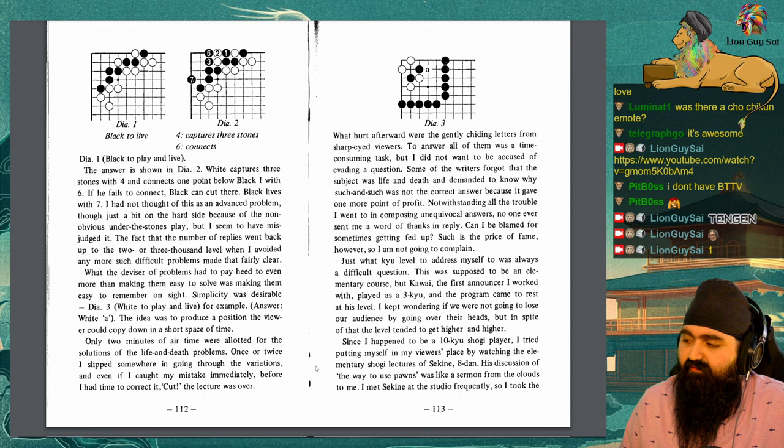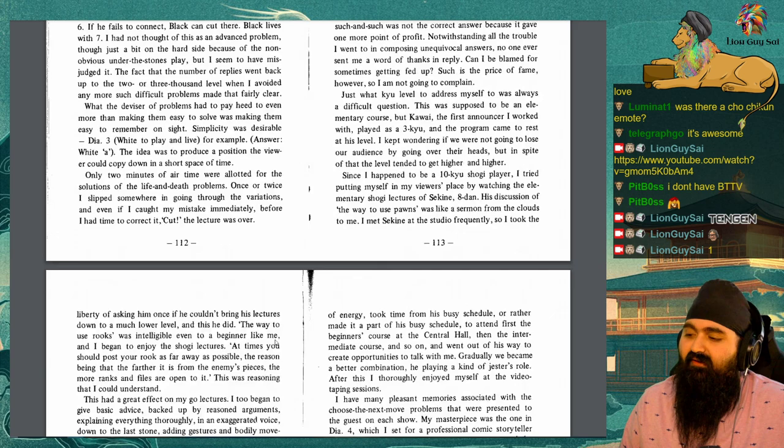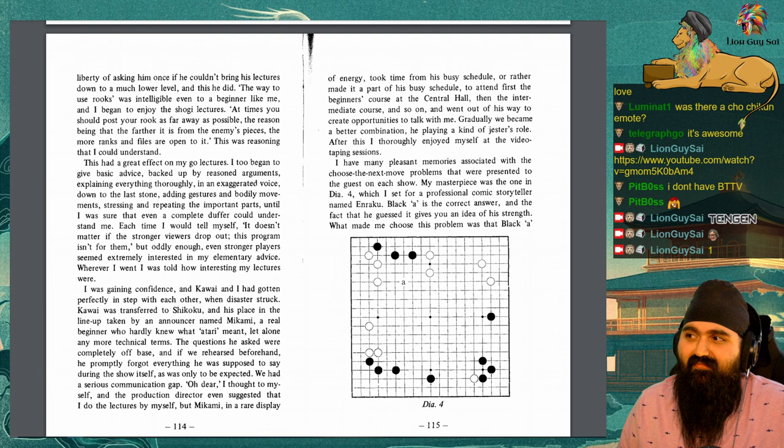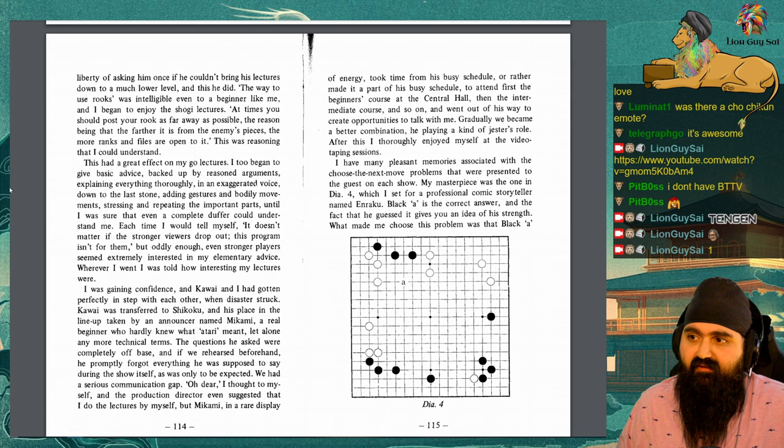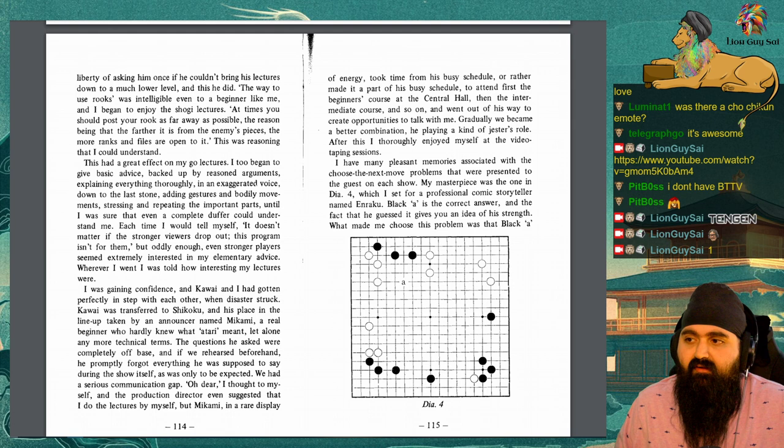I kept wondering if we were not going to lose our audience by going over their heads, but in spite of that the level tended to get higher and higher. Since I happened to be a 10-kyu shogi player, I tried putting myself in my viewer's place by watching the elementary shogi lectures of Sekine Eitan. His discussion of the way to use pawns was like a sermon from the clouds to me. I met Sekine at the studio frequently, so I took the liberty of asking him once if he couldn't bring his lectures down to a much lower level, and this he did. The way to use rooks was intelligible even to a beginner like me, and I began to enjoy the shogi lectures. At times, you should post your rook as far away as possible, the reason being that the farther it is away from enemy's pieces, the more ranks and files are open to it. This was reasoning that I could understand.